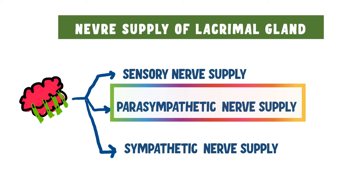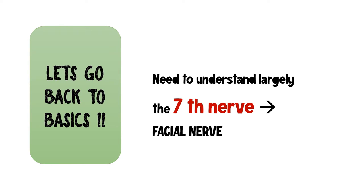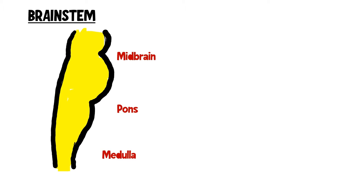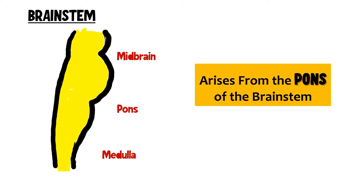Now let us talk about the parasympathetic nerve supply. To understand this, we need to understand the seventh nerve, the facial nerve. This is our brainstem — midbrain, pons, and medulla — and the seventh nerve arises from the pons of the brainstem. In the pons, we also have the origin of the abducent nerve, which is the sixth cranial nerve.